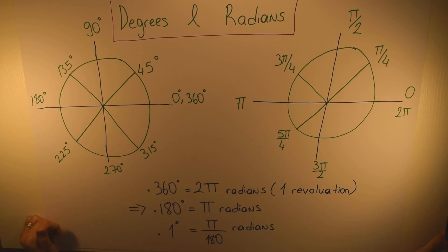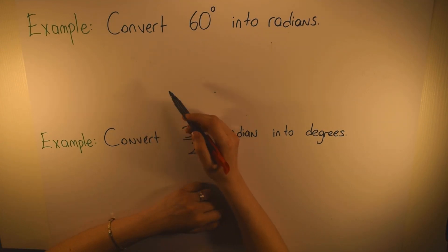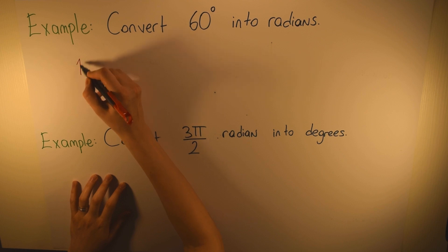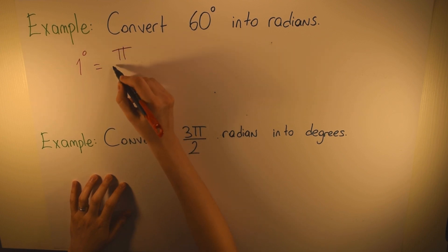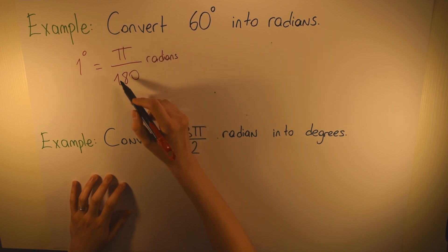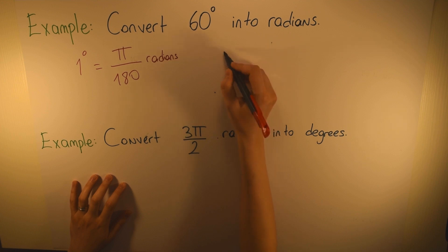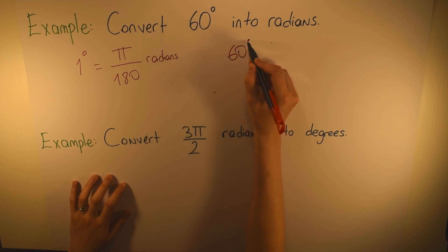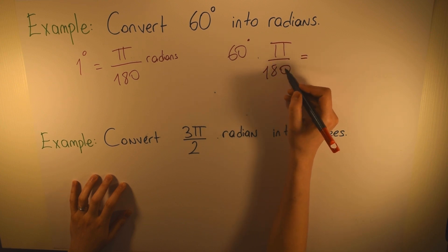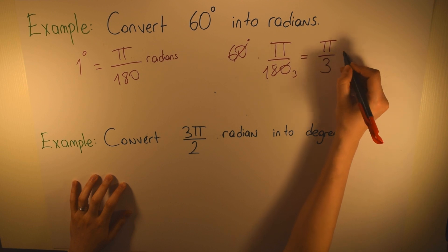Let's show some examples. In the first example we have: convert 60 degrees into radians. As we said before, 1 degree equals π/180 radians. So all we need to do is multiply 60 by this value: 60 degrees times π/180. When we simplify, we get π/3 radians.